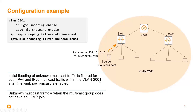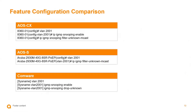Once this is enabled, please note: unknown multicast traffic means the multicast group does not have an IGMP join. The receiver is not participating, yet it is receiving traffic and its operations are being interrupted.